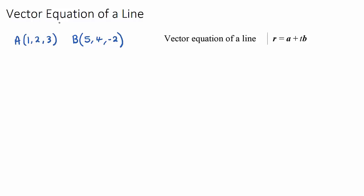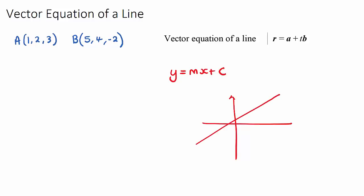In coordinate geometry, we found equations of lines in the form y = mx + c. If we had an xy-axis, we could find the equation of any line. C was the y-intercept — a point we knew the line passed through — and m was the gradient, which told us the direction the line travels. Those are the two things we needed: a direction, which is the gradient, and a point.